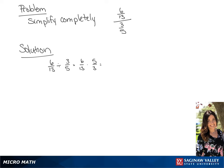Since 3 goes into the 6 and the 3, we can simplify. This gives us 2 over 13 times 5 over 1. If we multiply across, we get 10 over 13.